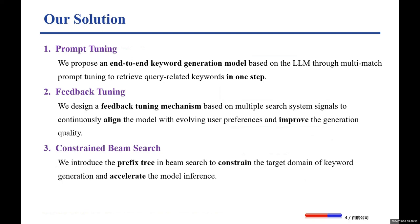Then, we design a feedback tuning mechanism based on multiple search system signals to continuously align the model with evolving user preferences and improve the generation quality. Additionally, we introduce a prefix tree in Beam Search to constrain the target domain of keyword generation and accelerate model inference.